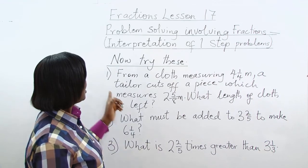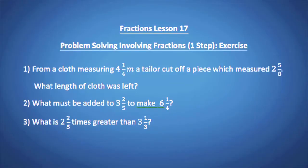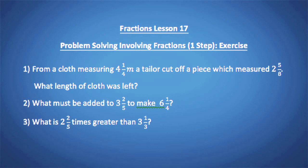Now try these. Question 1: From a cloth measuring four and one-quarter meters, a tailor cuts off a piece measuring two and five-eighths meters. What length of cloth is left? Find the operation and work it out. Question 2: What must be added to three and two-fifths to make six and one-quarter? Question 3: What is two and two-fifths times greater than three and one-third? Take time and work them all out.